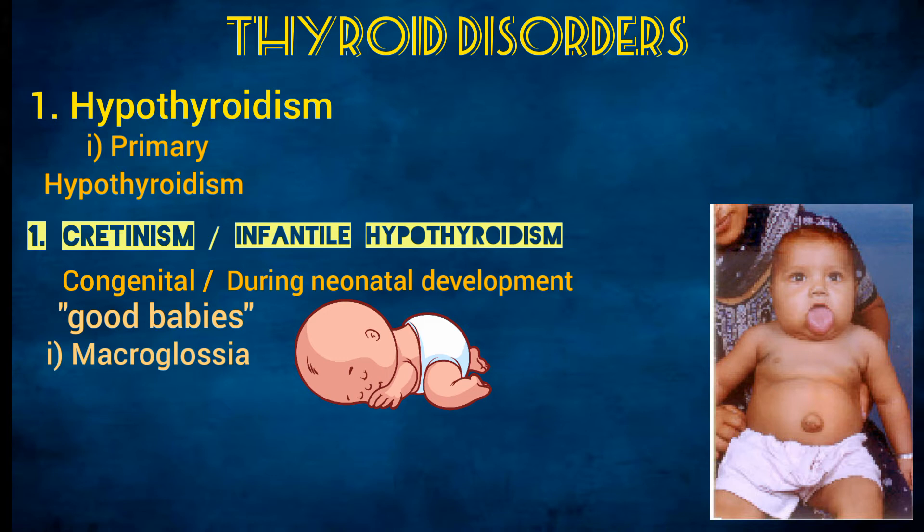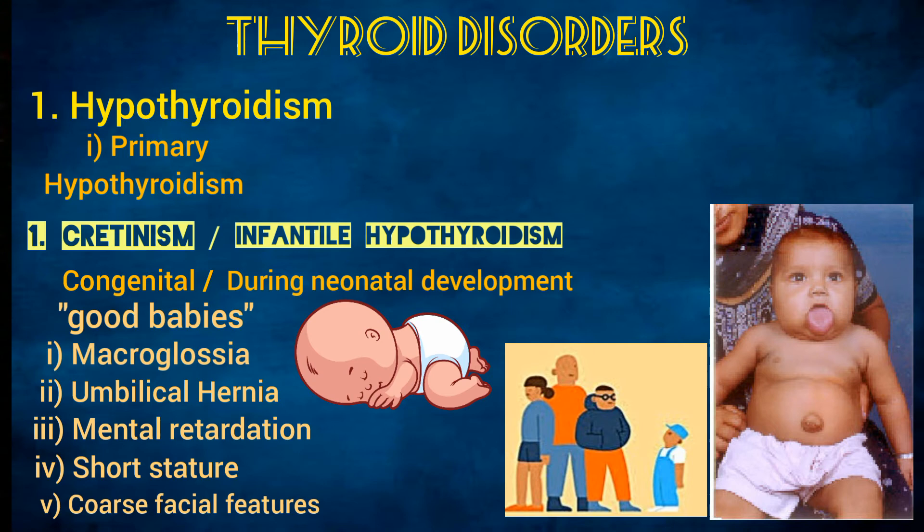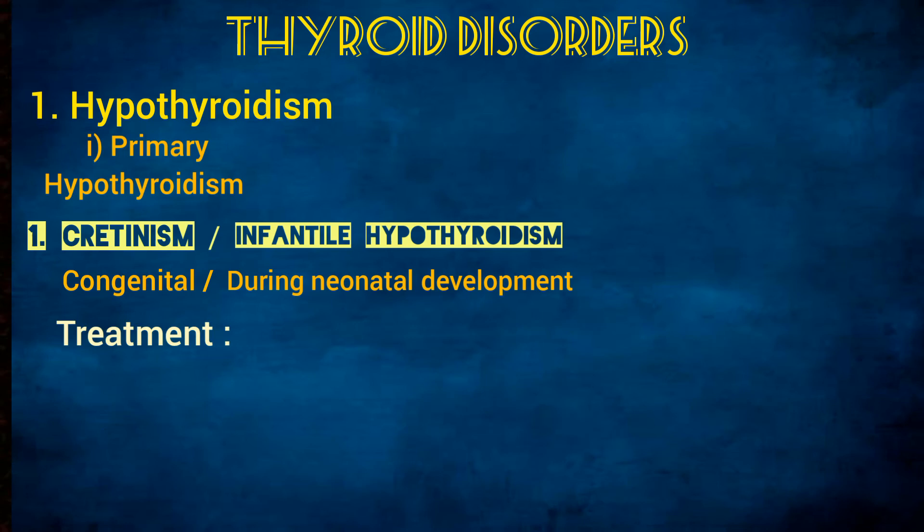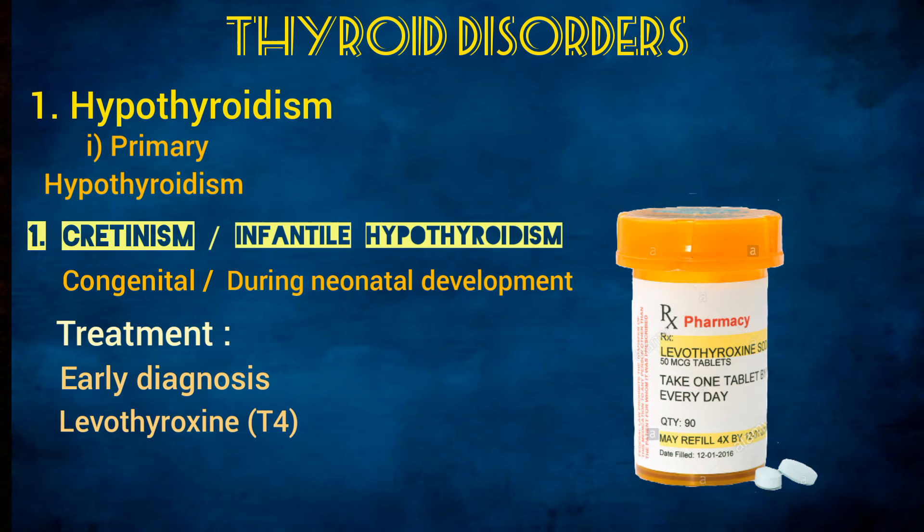These infants also have umbilical hernia, mental retardation, short stature, and coarse facial features. Diagnosis is confirmed by low levels of serum thyroid hormone and elevated TSH levels. The mainstay of treatment is early diagnosis and thyroid hormone replacement therapy with levothyroxine.